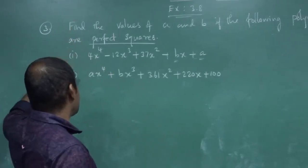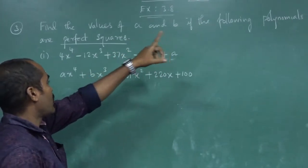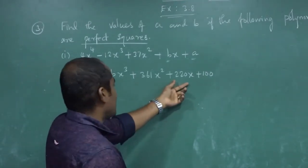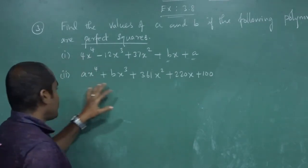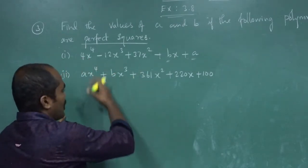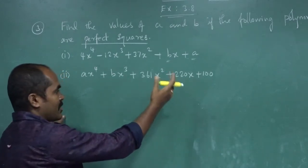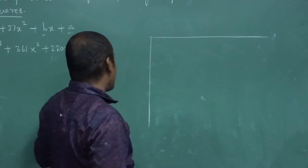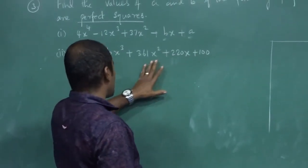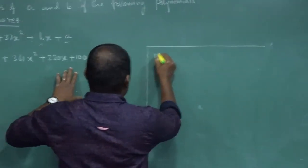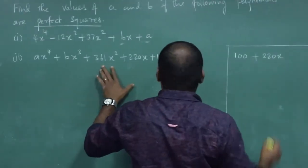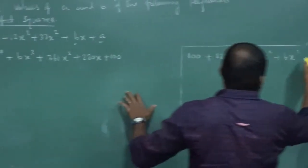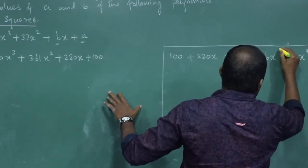Next, the second problem: Find the value of A and B if the following polynomials are perfect squares. The polynomial is Ax⁴ plus Bx³ plus 361x² plus 220x plus 100. Here A and B are unknown. For this type of problem, we want to rewrite the polynomial from lowest power to highest power — ascending order: 100 plus 220x plus 361x² plus Bx³ plus Ax⁴.